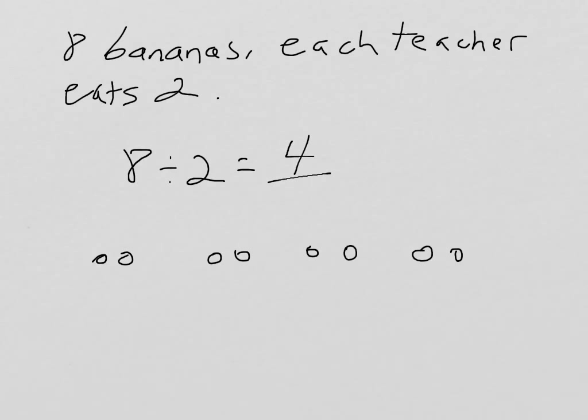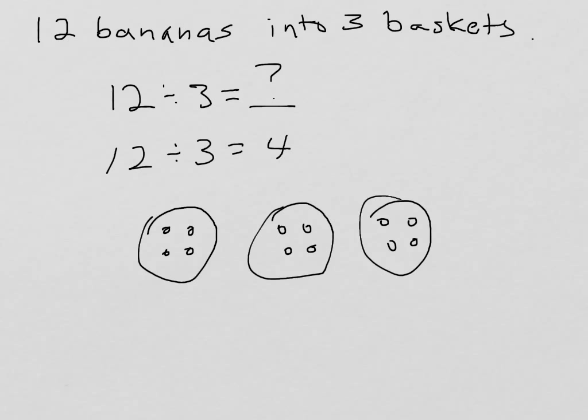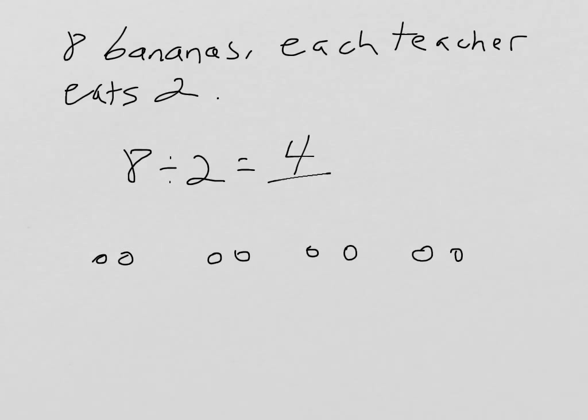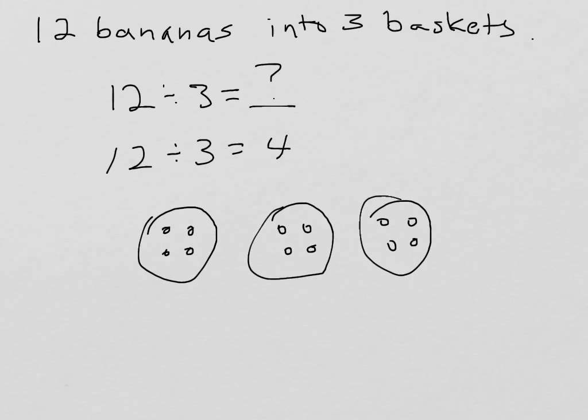So we have two different ways we can look at division. Either here, we solved to find the size of the groups. We had three groups, and we didn't know how many were going to be in each. Here, we solved for the number of groups. We knew how big each group was going to be, but not how many we would have. So here we discovered that four teachers could eat bananas. Here we discovered that four bananas could go into each basket.